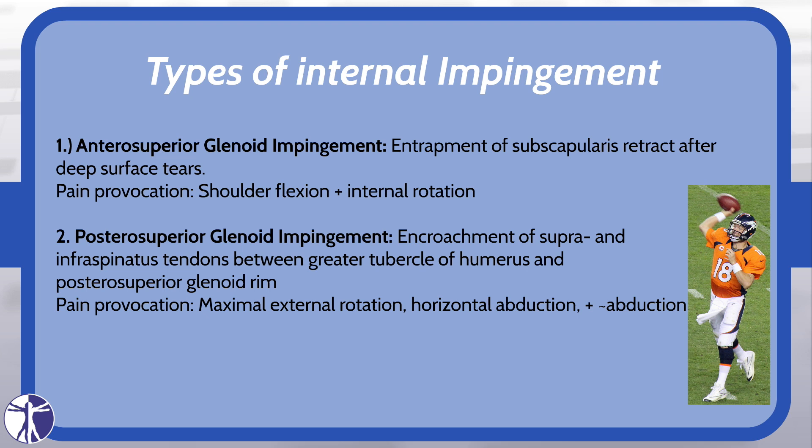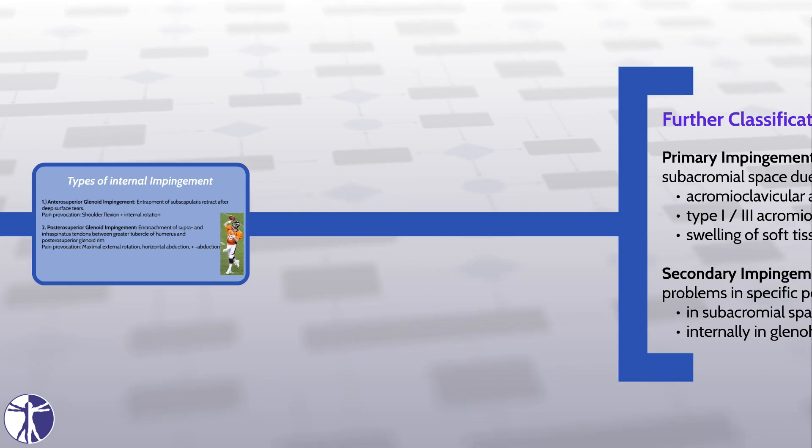Postero-superior glenoid impingement consists mostly of the encroachment of the supra- and infraspinatus tendons between the greater tubercle of the humerus and the posterior-superior rim of the glenoid. Pain is typically provoked in maximal external rotation, horizontal abduction, and a certain amount of abduction — just imagine an overhead throwing position.